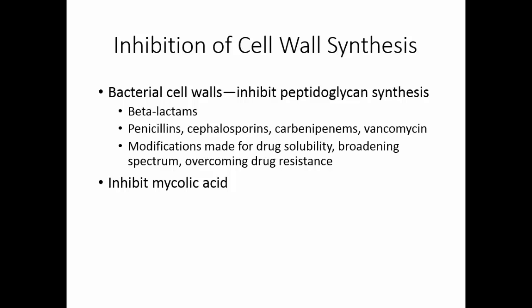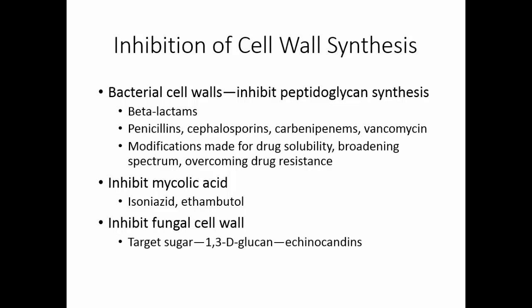Mycolic acid is found in the mycobacterial cell wall. Isoniazid and ethambutol inhibit mycolic acid synthesis, so they're effective in treating mycobacterium. Fungal cell walls can be inhibited by targeting the sugar 1,3-D-glucan; the group of drugs known as the echinocandins work in this fashion.